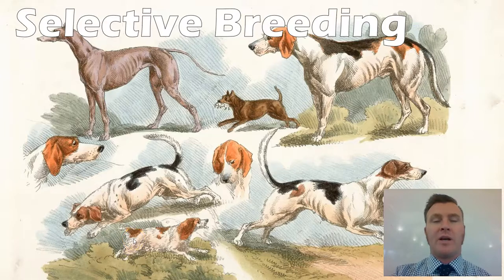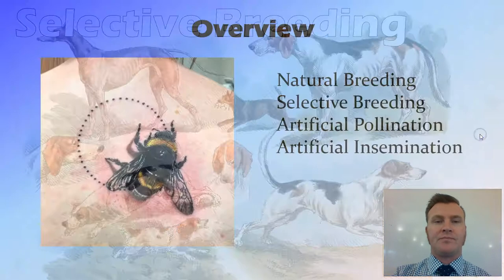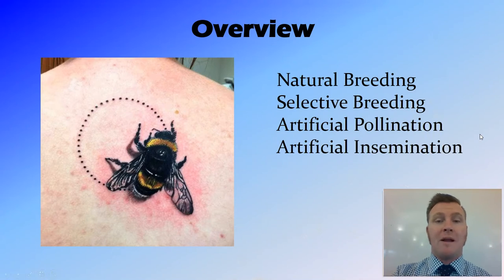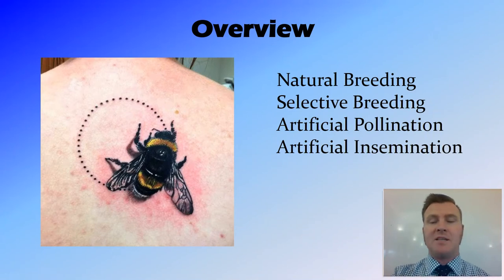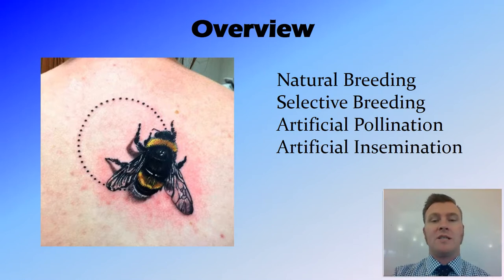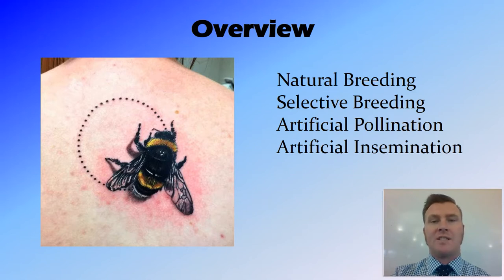Hi guys, in this video we're going to talk about selective breeding. We're going to talk about natural breeding, then selective breeding and how that's different, and then talk about two technologies or processes that are used in selective breeding: artificial pollination and artificial insemination.